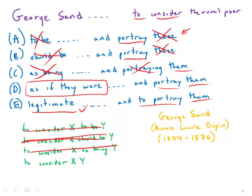Here, using 'as if they were' would imply that the rural poor are, in fact, not legitimate subjects of literature — and that's not really the sense of the sentence at all. The sentence has no interest in making a claim like that. All we're saying is that Jorsand considered those people legitimate subjects. So D is not right either. And it turns out E is the only one that has the correct pronoun, the correct parallelism, and the correct idiom following the verb 'to consider.' So E is by far the best answer choice.